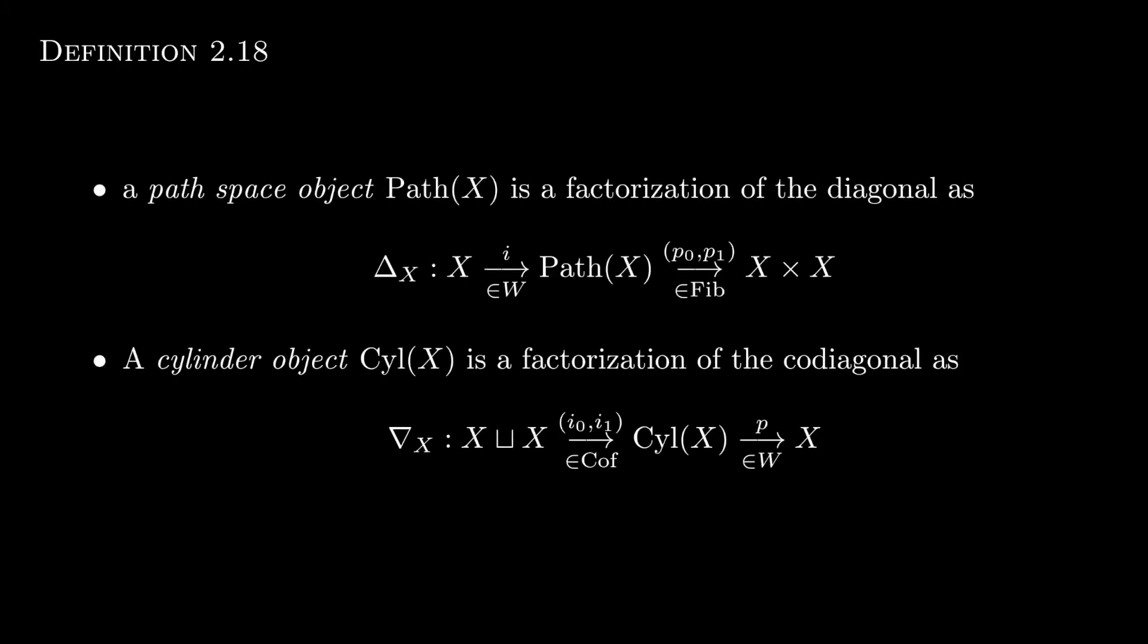If you recall from our work with topological homotopy theory, the keys to defining right and left homotopy were path space objects and cylinder objects respectively. So let's define these things in the abstract setting of model categories.